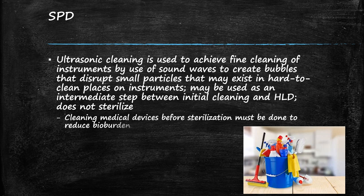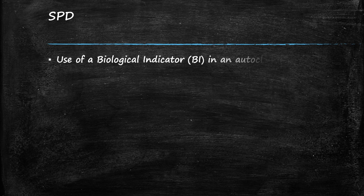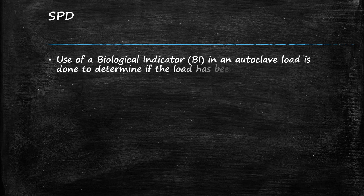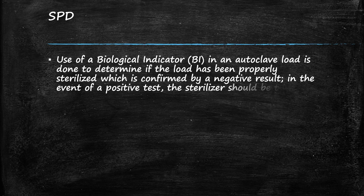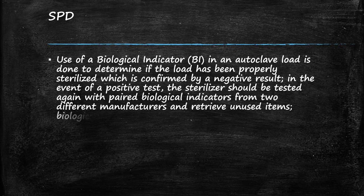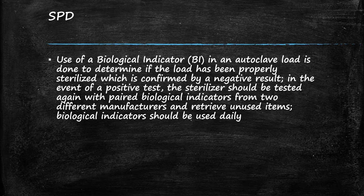Cleaning medical devices before sterilization must be done to reduce the bio-burden. Use of a biological indicator in an autoclave load is done to determine if the load has been properly sterilized, which is confirmed by a negative result. In the event of a positive test, the sterilizer should be tested again with paired biological indicators from two different manufacturers, and all unused items should be retrieved. Biological indicators should be used daily.